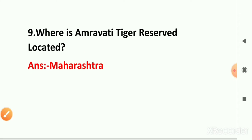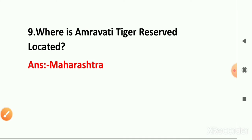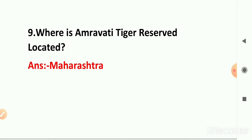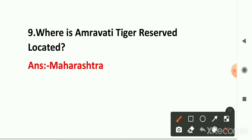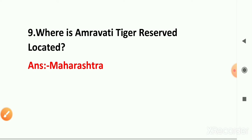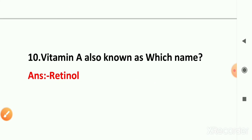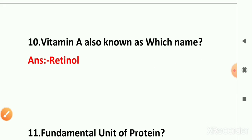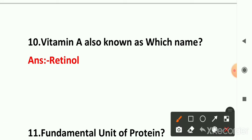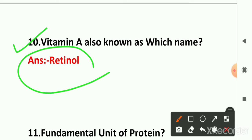Next question: where is the Orang Tiger Reserve located? The right answer is Maharashtra. Question number 10: Vitamin A is also known by which name? Vitamin A is also known as retinol. Retinol is the correct answer.